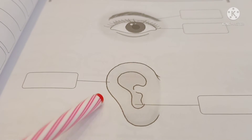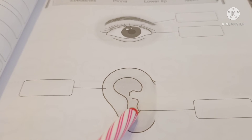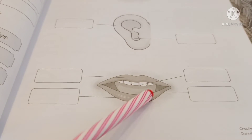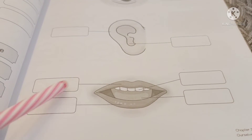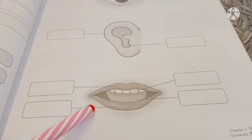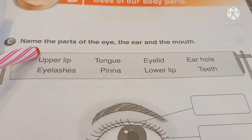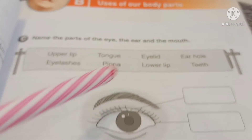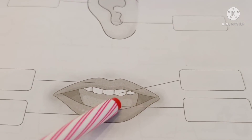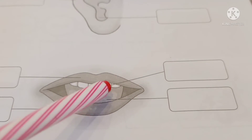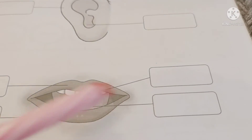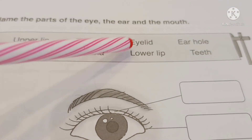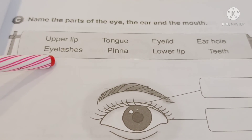This is the ear. Do you remember what this is? Pinna. And what is inside? It's the ear hole. And this is the mouth. Do you remember what this is — upper lip or lower lip? This is the upper lip. And what about this? This is the lower lip. And inside, do you know what this is? It's the tongue. And one, two, three, four, five — what do you see? It's teeth. So write all of these: teeth, ear hole, eyelid, lower lip, pinna, tongue, eyelashes, upper lip.